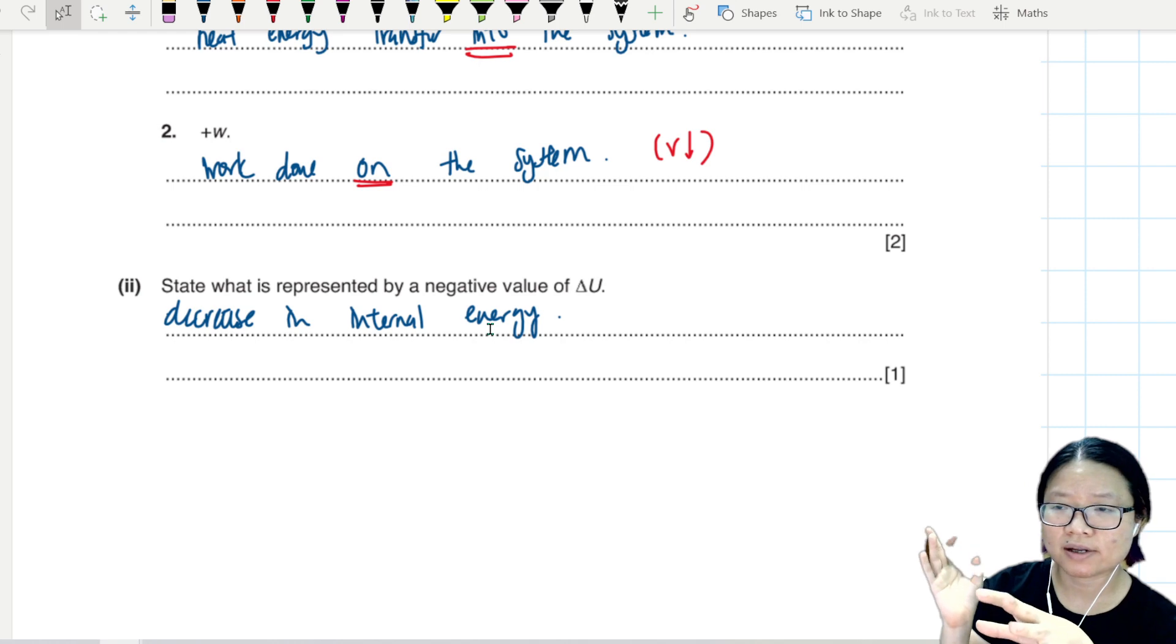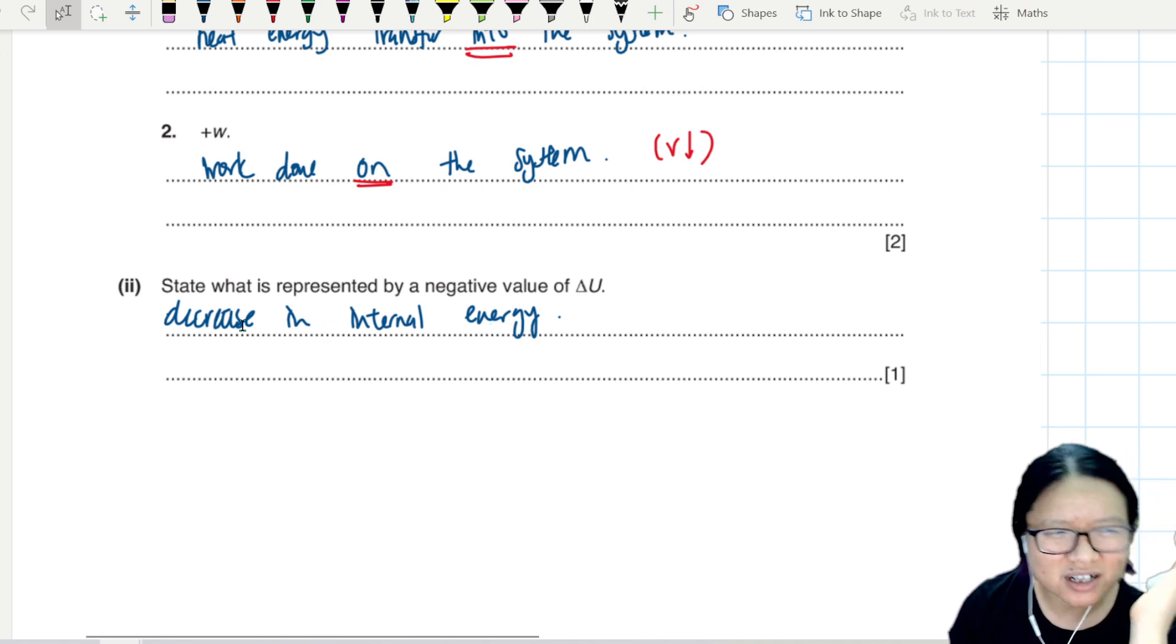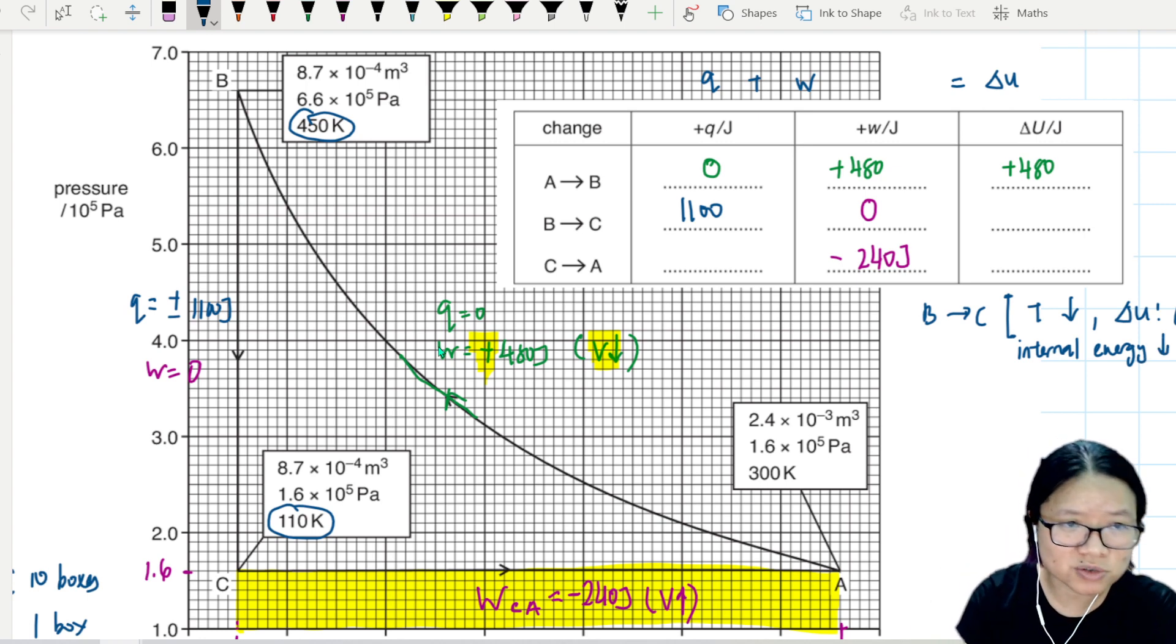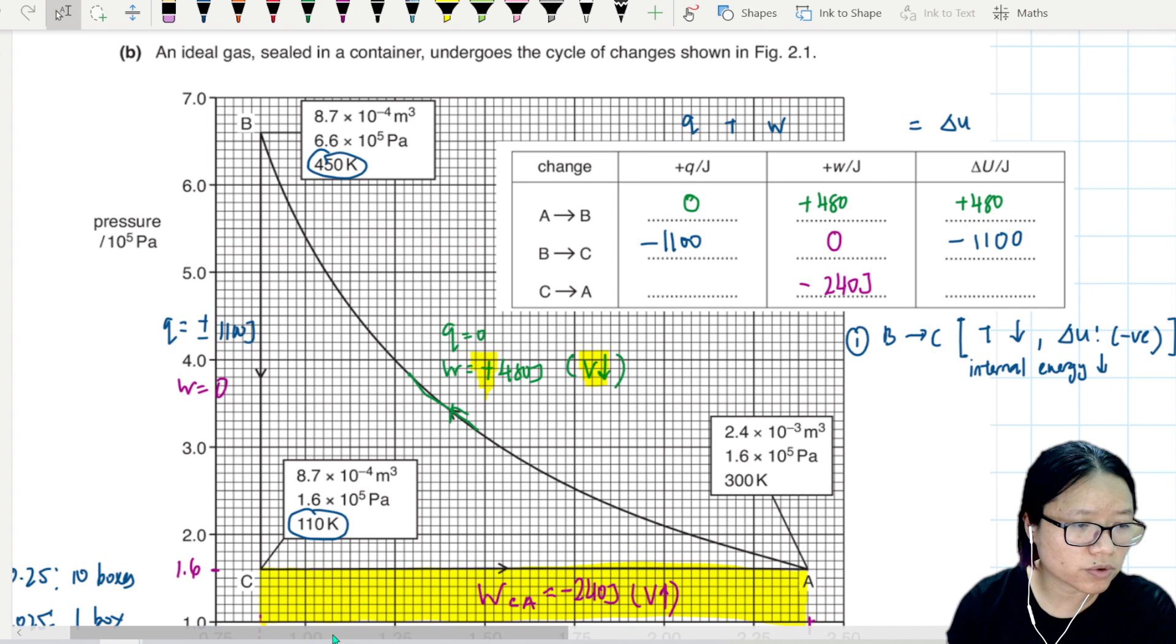So sometimes Cambridge likes to do this kind of plot twist question. They will give you a hint in front and then you yourself forget about the hint when you solve the question, then you're actually like, yeah, they're actually trying to help me but I didn't see it. So now the internal energy is decreased because there's a negative delta U. How do we know internal energy decreases? Because temperature decreases. Temperature decreases, the gas particles won't vibrate that much. So this is negative 1100. So negative 1100 plus zero will be negative 1100.